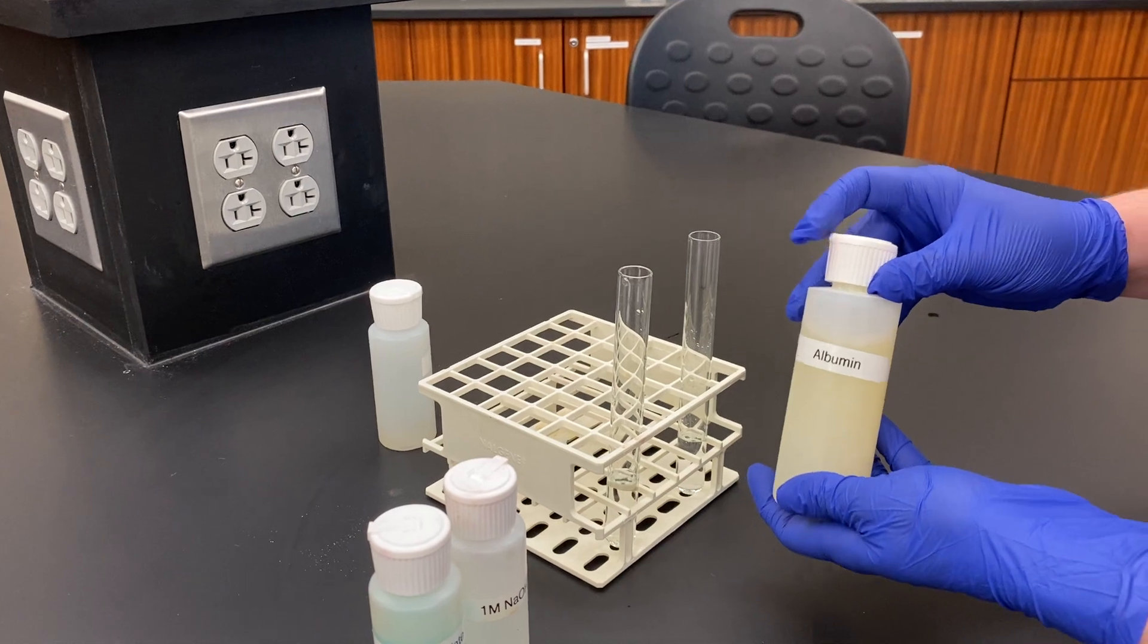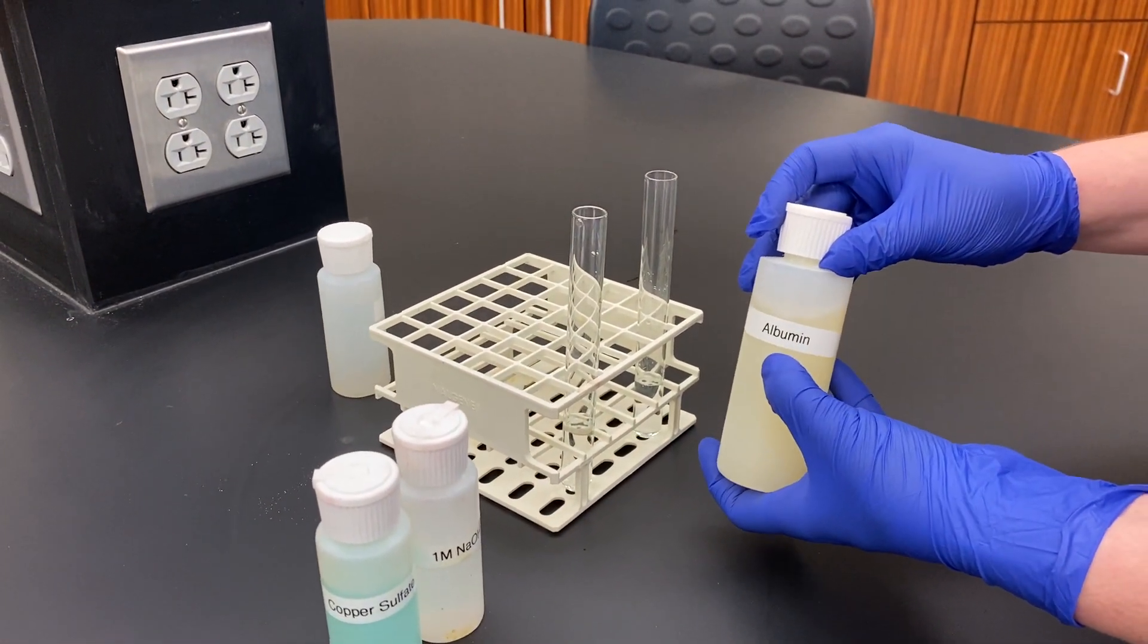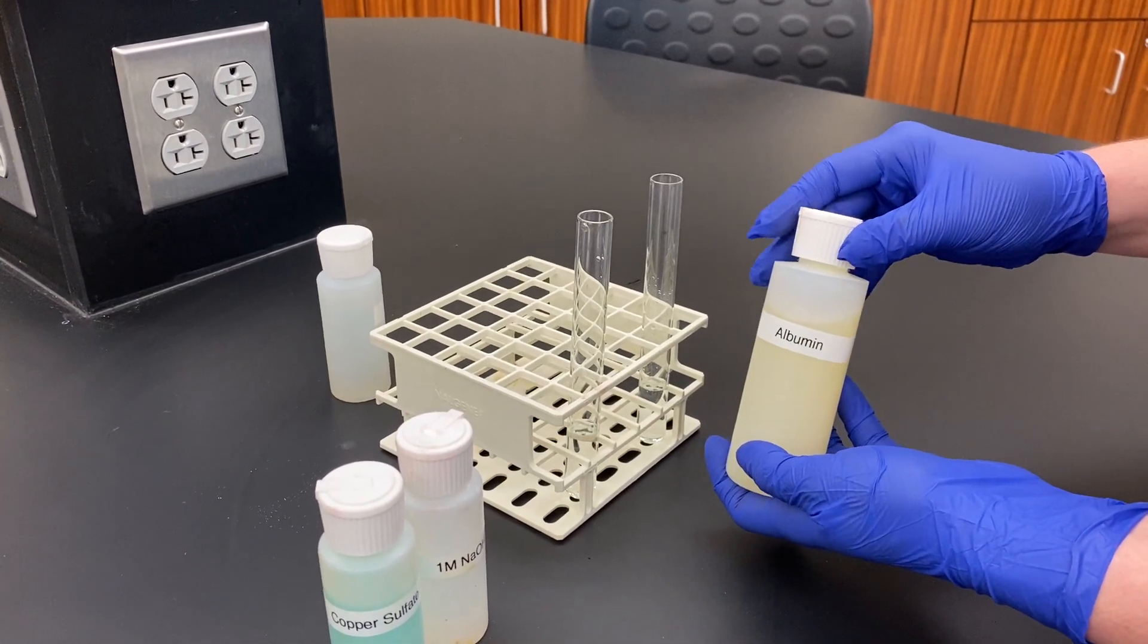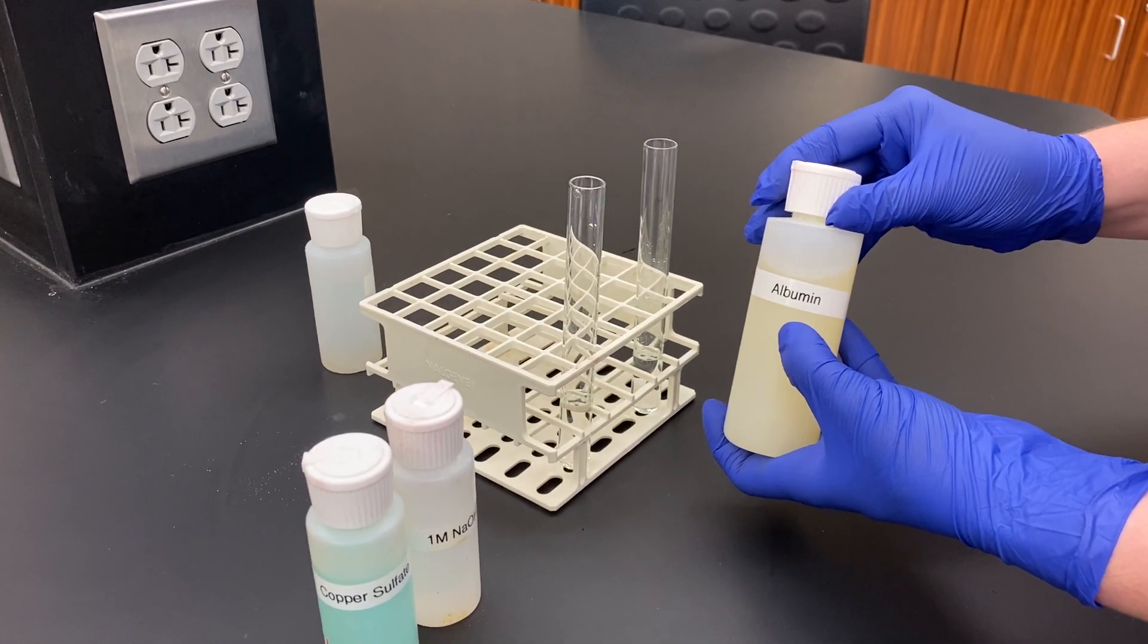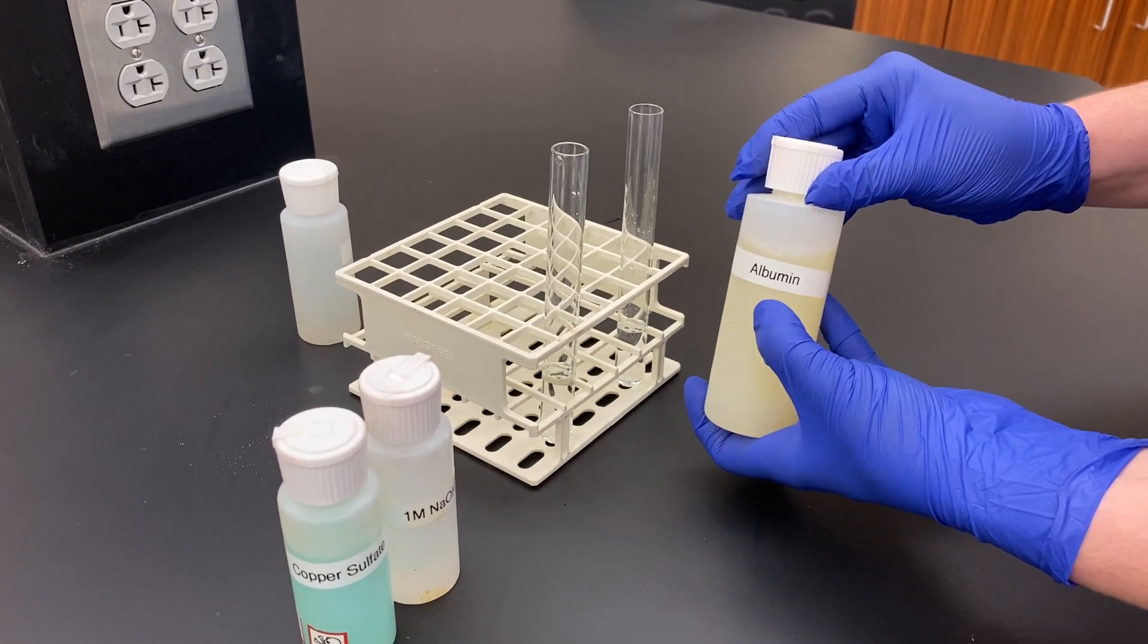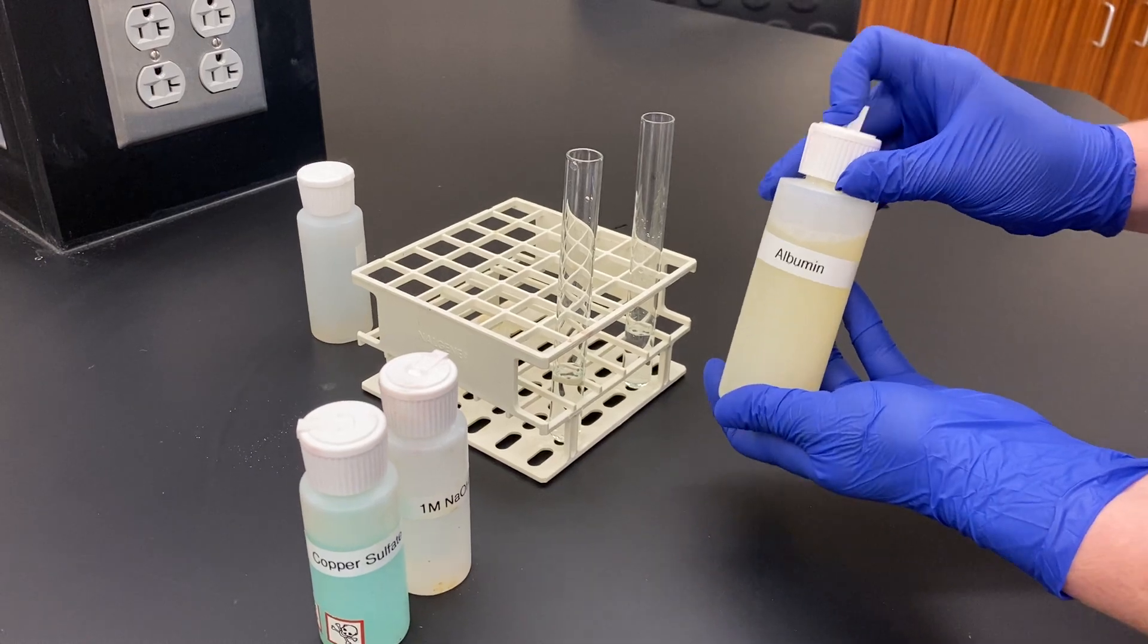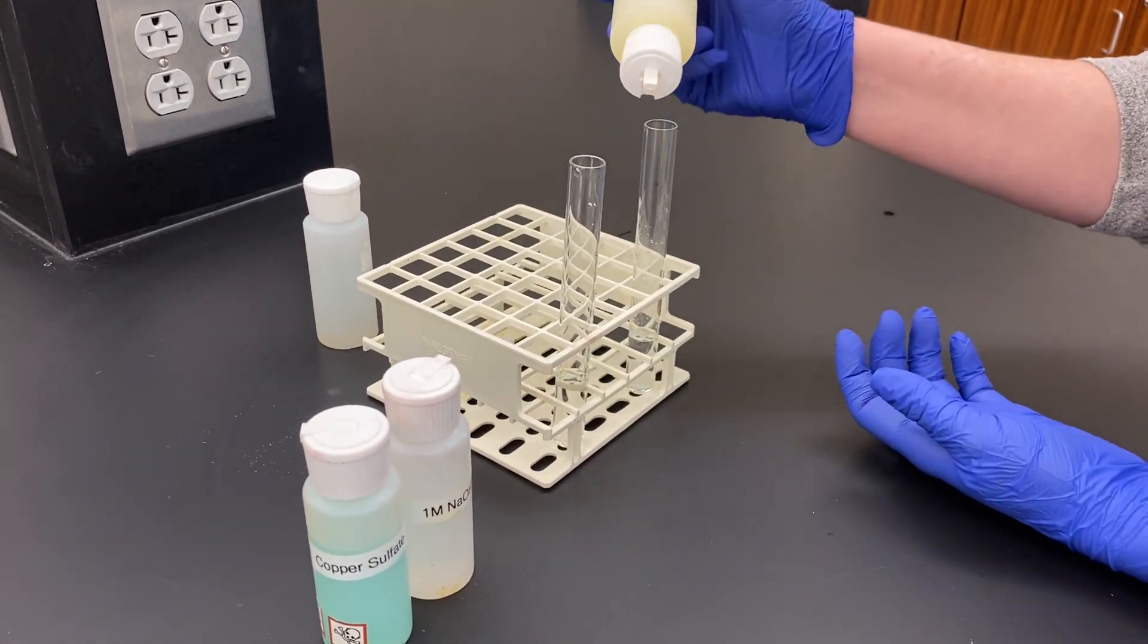And we are going to add albumin as our example protein. You might have talked about albumin before in the process of denaturation. Albumin is a protein that's commonly used in a lot of different organisms. You might have talked about the concept of how when you fry an egg, you permanently denature a protein within the egg white. What you're denaturing is the protein albumin. We're going to add 10 drops of albumin.